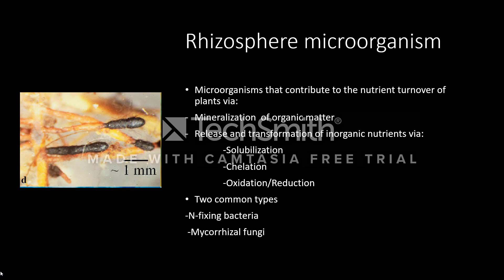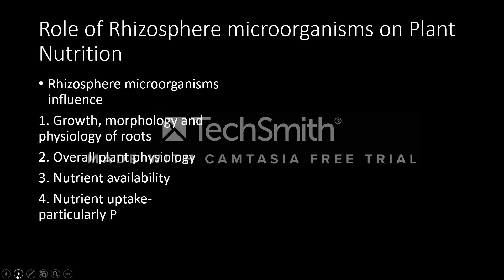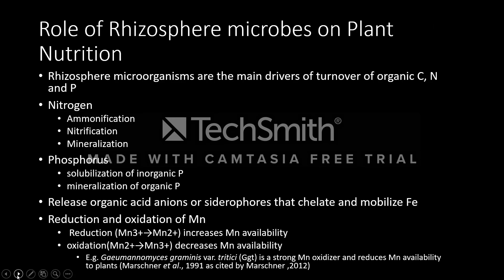In this presentation, our focus will be on mycorrhizal fungi. Rhizosphere microbes greatly influence several aspects of plant morphology and nutrition. They help with cycling of nitrogen by ammonification, nitrification, and mineralization. They also cycle phosphorus for plant uptake, solubilization of inorganic phosphorus, and mineralization of organic phosphorus. Other microbes can release organic acids, anions, or siderophores that chelate and mobilize iron. They are also responsible for reduction and oxidation of manganese.